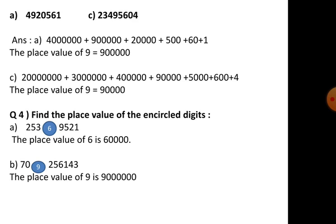Question 4: find the place value of the encircled digit. The encircled digit is six. Going through the place value positions — ones, tens, hundreds, thousands, ten thousands, lakhs, ten lakhs — six is in the ten lakhs place, so we write nine and the rest will be zeros.